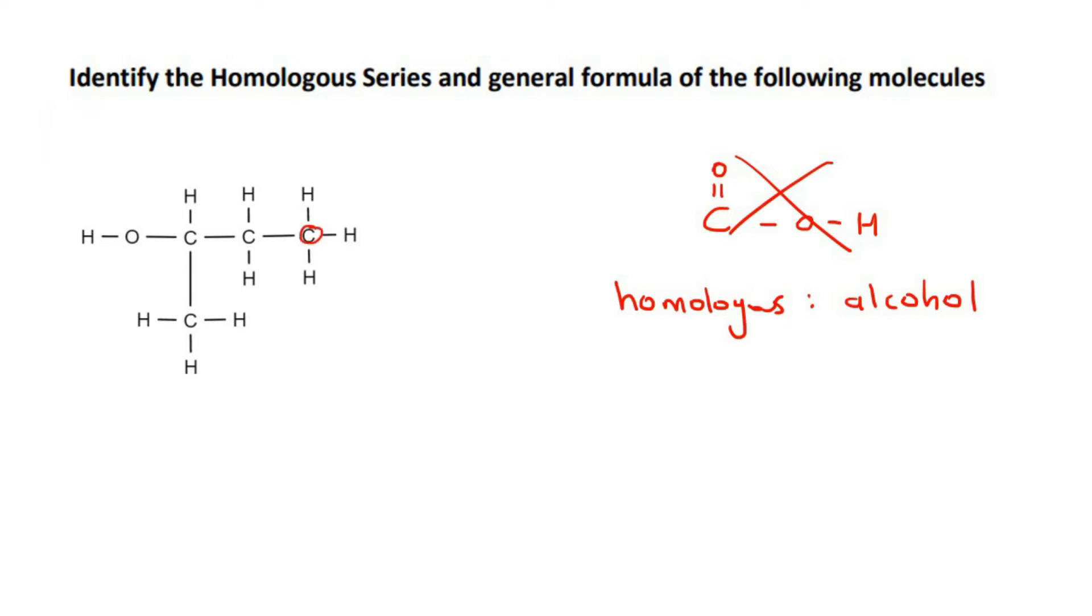You can see that there are one, two, three, four carbons. So let's write that down. Then for the hydrogens, there are one, two, three, four, five, six, seven, eight, nine. So we can say nine. And then there's an OH.